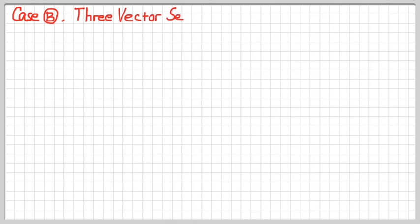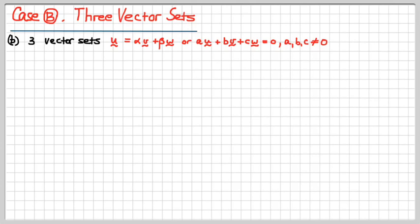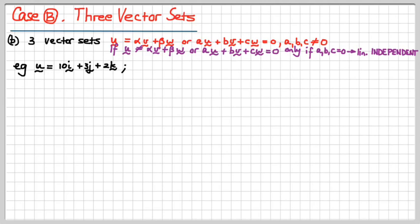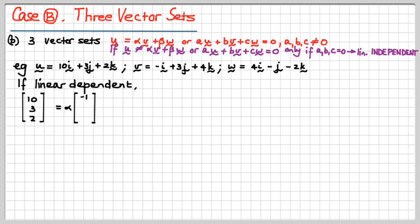Here's case B for you and me. This is three vector sets. Now this is where it gets a bit more interesting, but the same principle applies exactly. I'll give you a set of three vectors and we're going to work out if they are linearly dependent. Let's look at a real life example now. There's u, it's 10i plus 3j plus 2k, and v is minus i plus 3j plus 4k. Now, I'm just writing those vectors in columns as if they were matrices, but no they're just vectors written in columns without the i, j, k format.